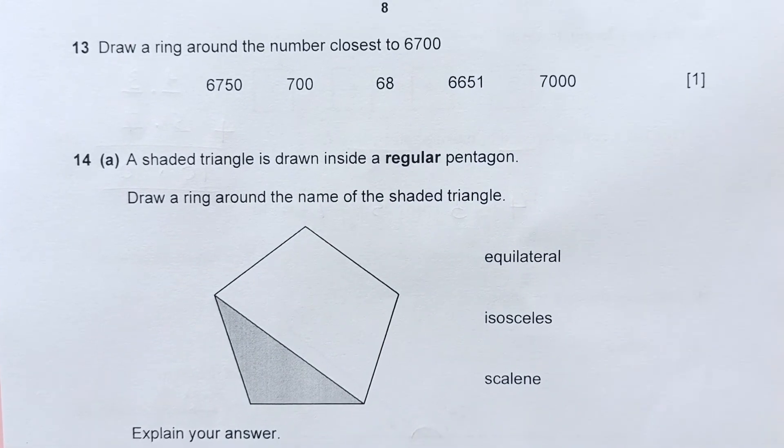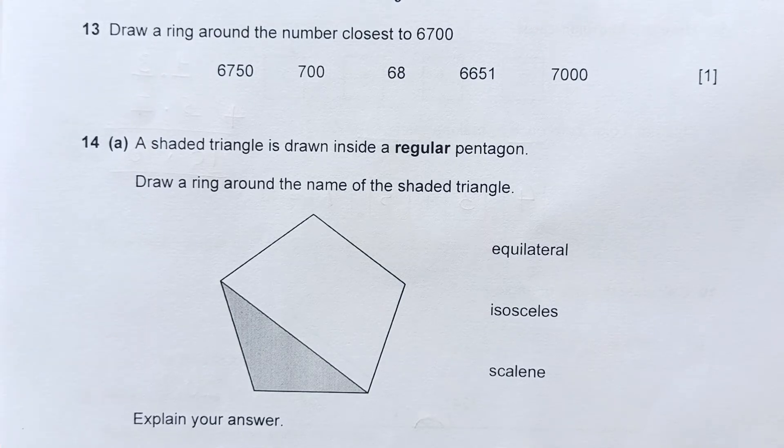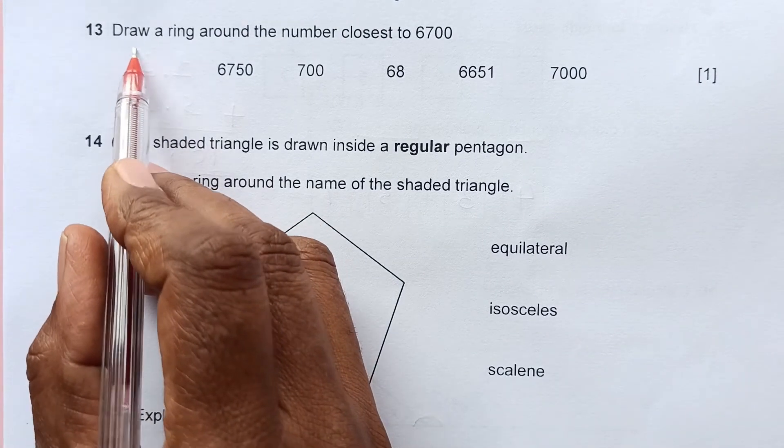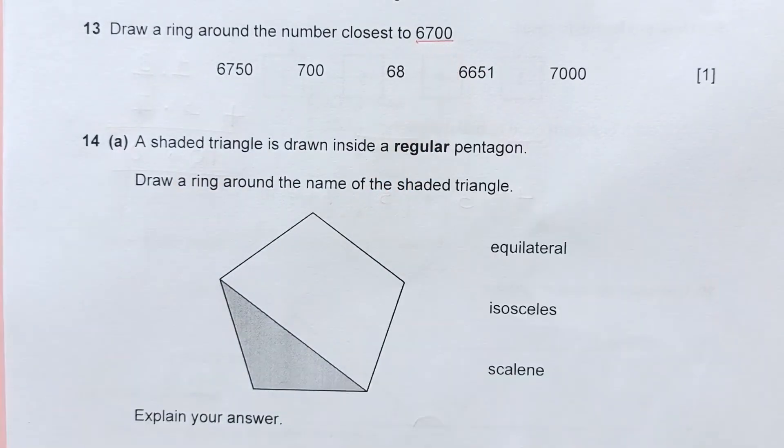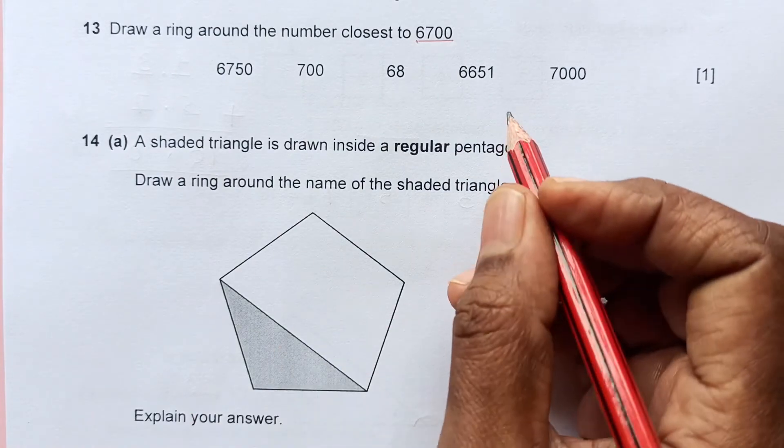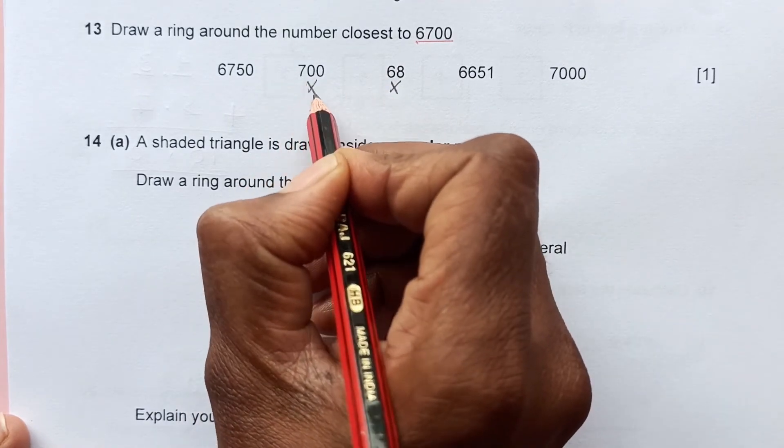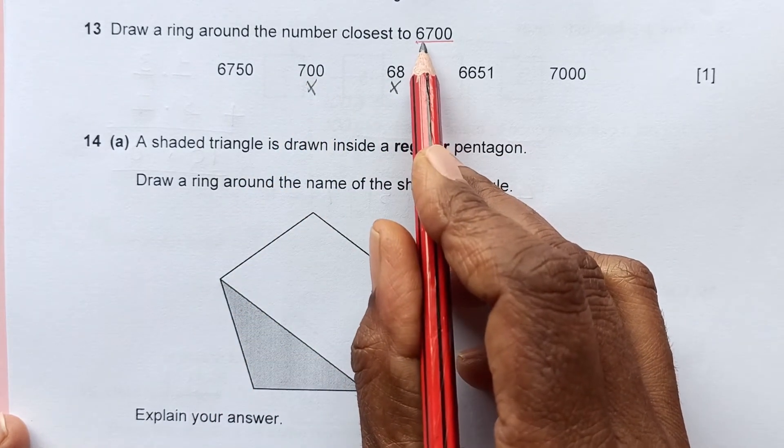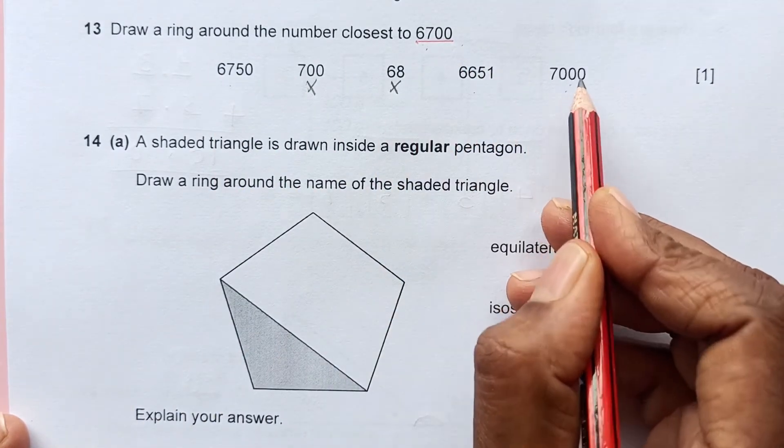Before we start number 13, I would again request you to subscribe to my channel and press the like button if you like the video and share it with your friends. Thank you so much for your support. Number 13. Draw a ring around the number closest to 6,700. You need not do actual calculation for some of them like 6,800 is too far, 7,000 is too far.